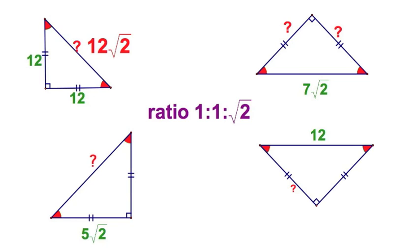Let's try this one. Let's go to the right. 7 radical 2. Remember, the ratio is 1-1 radical 2. Well, what number times radical 2 gives me 7 radical 2? Well, that's pretty straightforward. 7-7-7 radical 2.